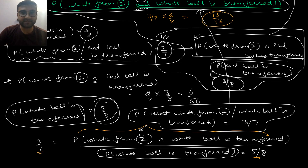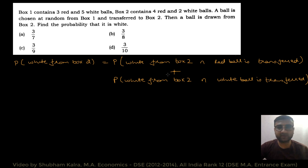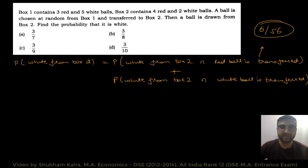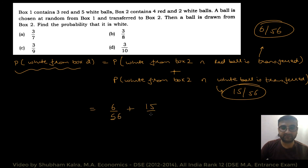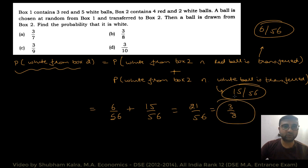So let me write the final expression in a neat manner. P(white from box 2) = 6/56 + 15/56 = 21/56, which is equal to 3/8. So option number B is the right answer.